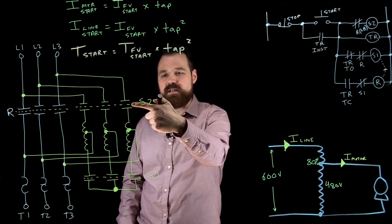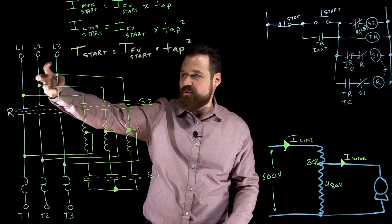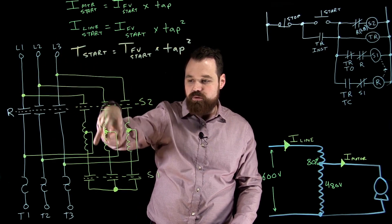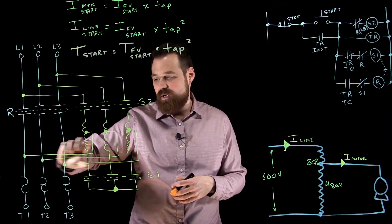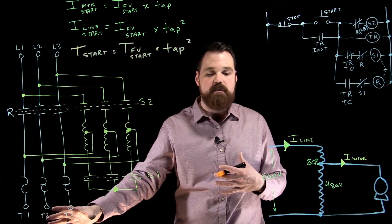We've energized S2 and S1. S2 allows the current to flow from my source through the autotransformer, where those are wide so we see the full effect of the autotransformer, and then to my motor. Whatever tap I'm on, that's how much voltage I'm going to see at my motor.